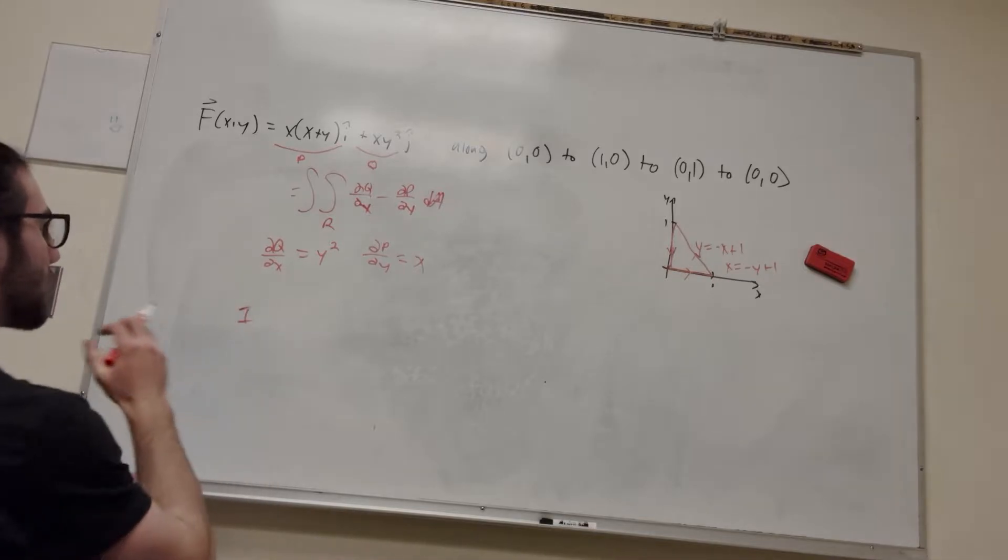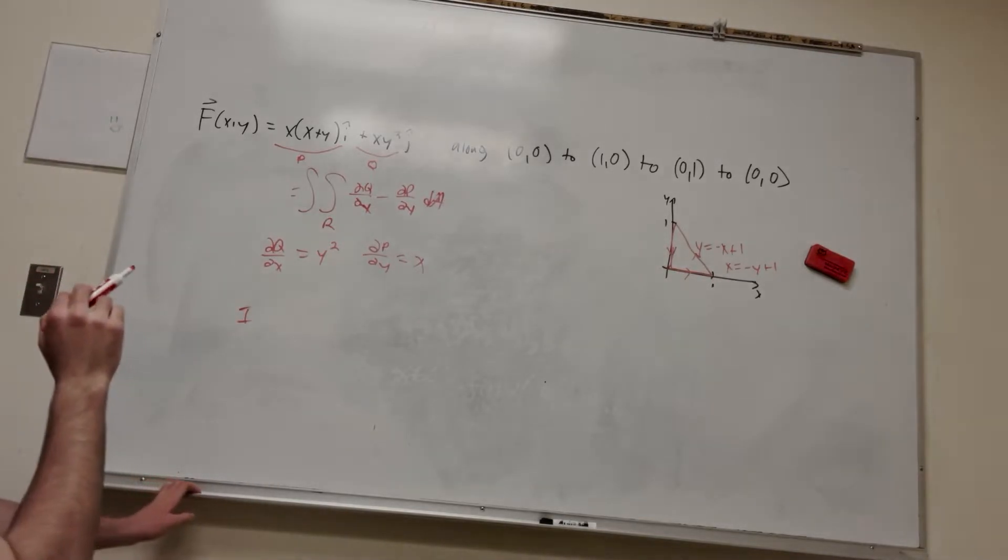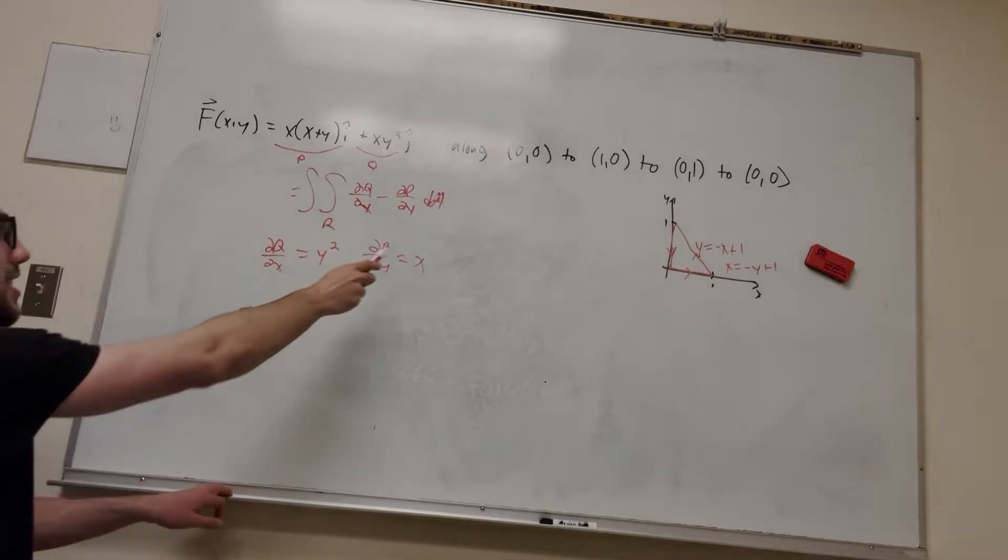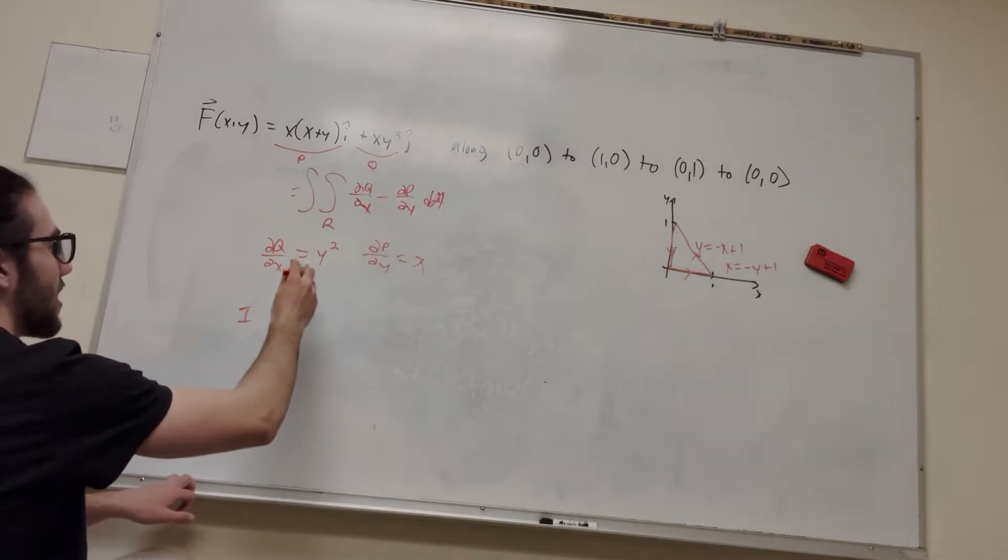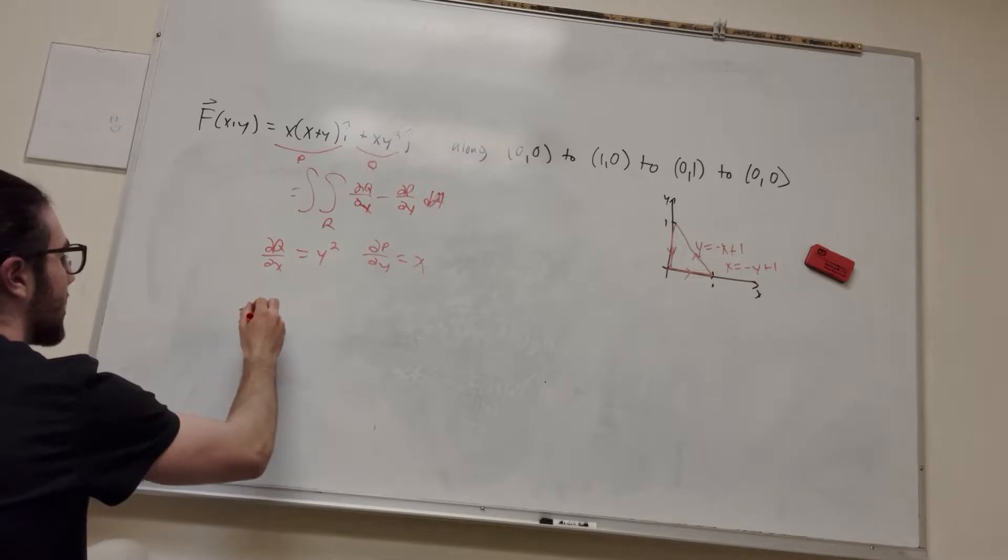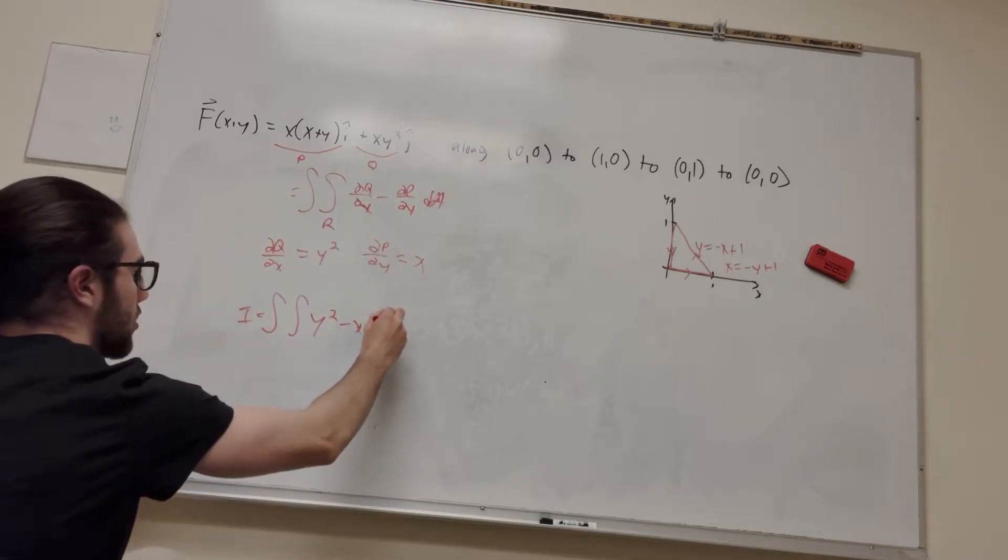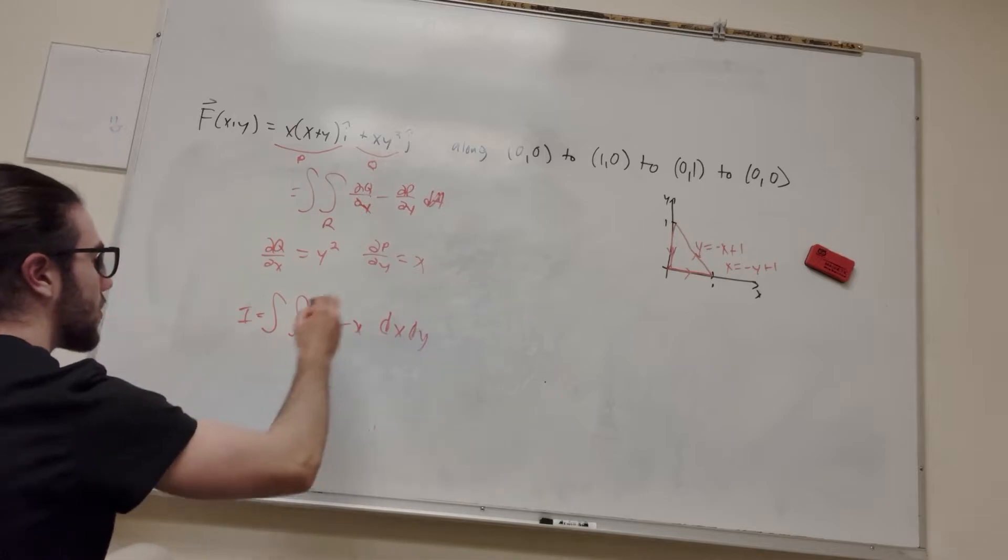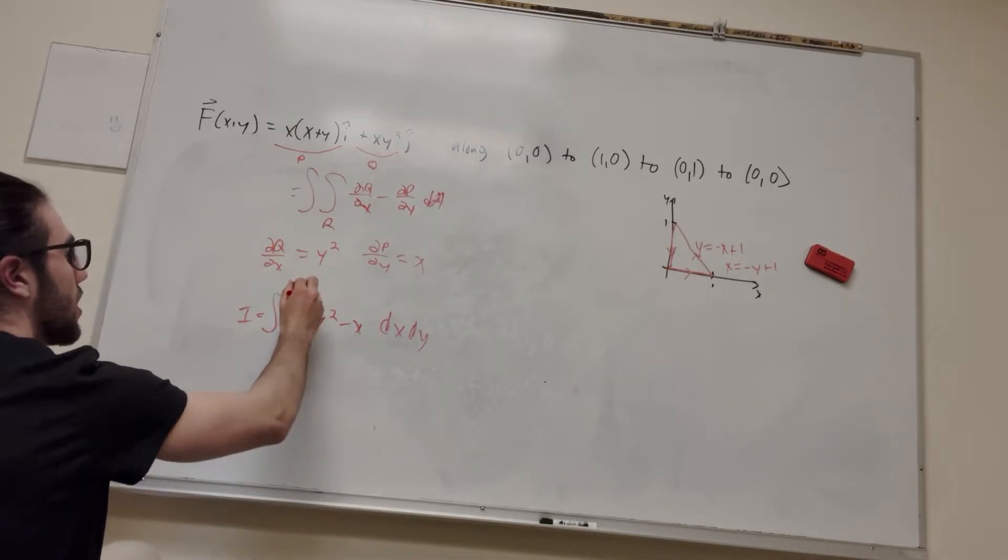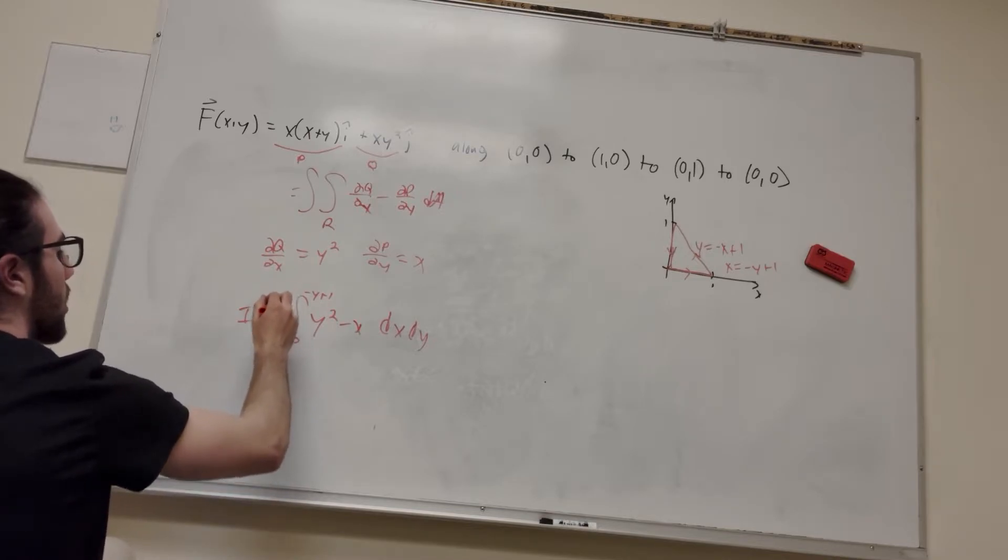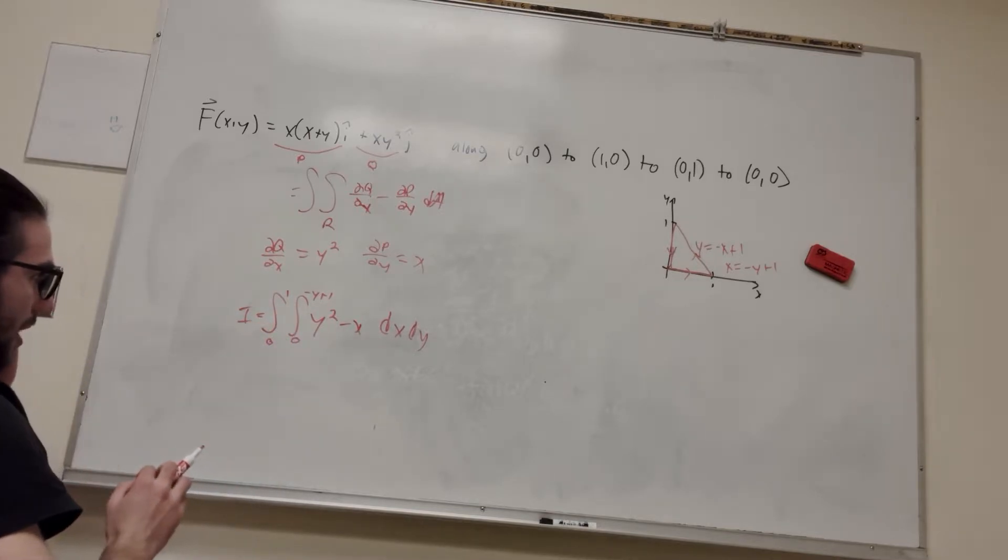So our integral, let's see, how do we want to solve this? I'm thinking I'm going to want to solve this with respect to x first, because this x is going to be a lot simpler than ending up with a big y theory. So it's going to be y squared minus x from our formula here. We're going to do dx dy, so dx goes from 0 to negative y plus 1, and y goes from 0 to 1. So this is our double integral, and we can solve it.